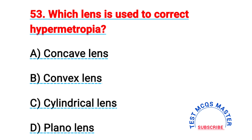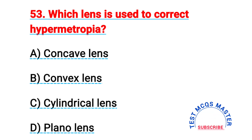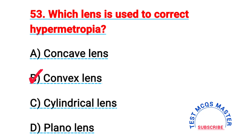Question number fifty-three: which lens is used to correct hypermetropia? The right answer is B, convex lens.